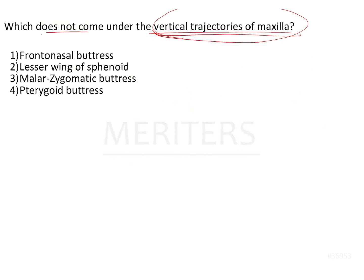Returning to the question: which does not come under the vertical trajectories of the maxilla? The vertical trajectories of the maxilla consist of the frontonasal buttress, the malar zygomatic buttress, and the pterygoid buttress. The lesser wing of sphenoid is actually a horizontal trajectory of the maxilla, not a vertical one.